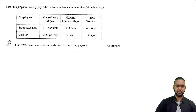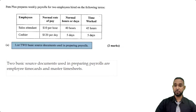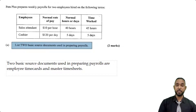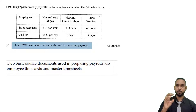The first part asks for two basic source documents used in preparing payrolls, just for two marks — simple and straightforward. Two basic source documents used in preparing payrolls are employee timecards and master timesheets. If you know of any other source documents used in preparing payrolls, leave your answer in the comment section below, and we'll combine all the different ones so we can learn from each other.